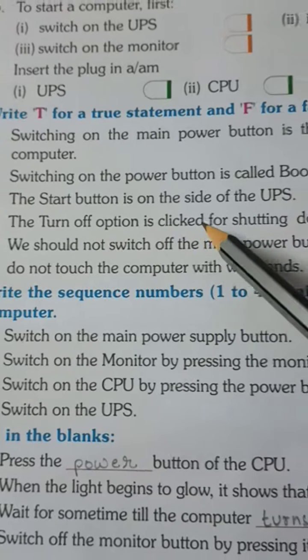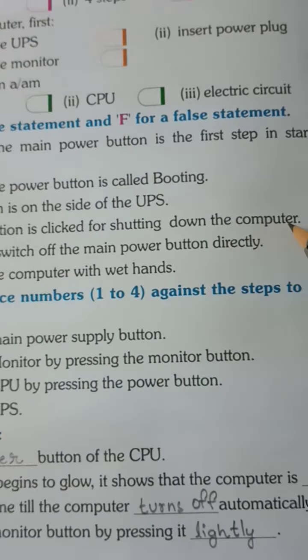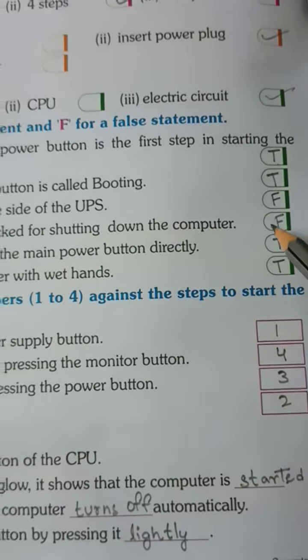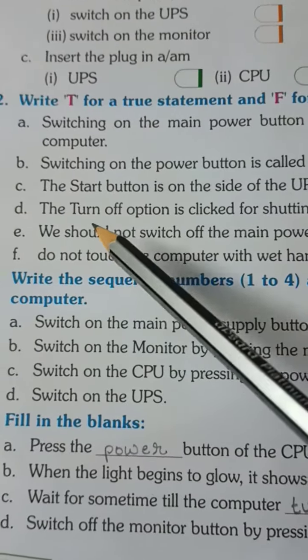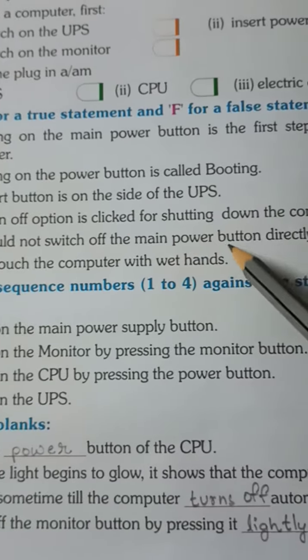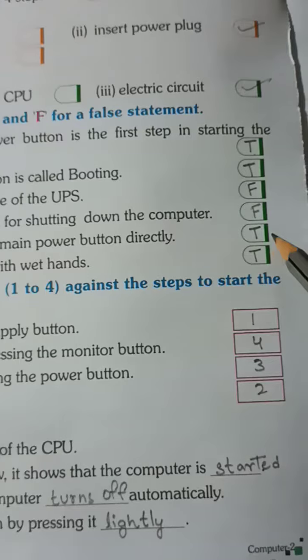D. The turn-off option is clicked for setting down the computer. What is false? Number 3. We should not switch off the main power button directly. This sentence is true.